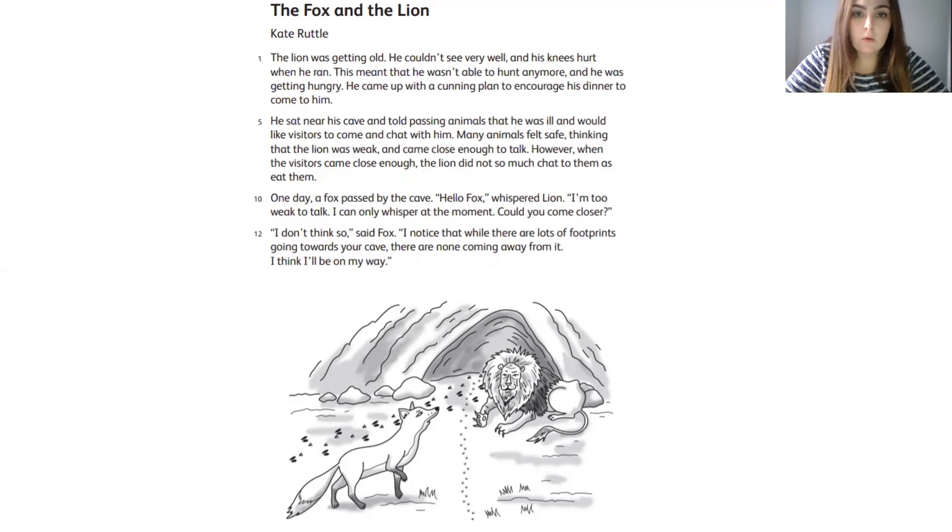The lion was getting old. He couldn't see very well and his knees hurt when he ran. This meant that he wasn't able to hunt anymore and he was getting hungry. He came up with a cunning plan to encourage his dinner to come to him. He sat near his cave and told passing animals that he was ill and would like visitors to come and chat with him. Many animals felt safe, thinking that the lion was weak and came close enough to talk.